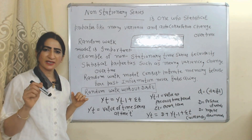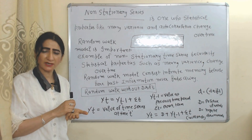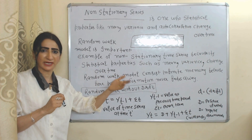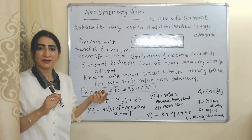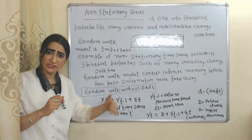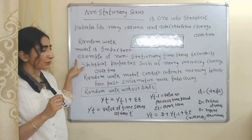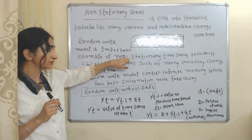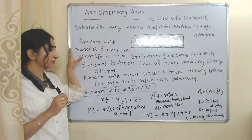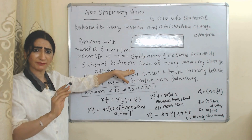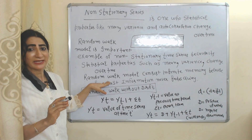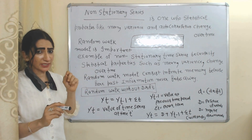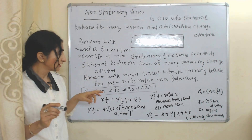In the case of a non-stationary series, mean, variance, and autocorrelation will change over the time period. The random walk model is an important example of a non-stationary time series, because in the case of a random walk model, mean and variance change over the time period. The random walk model also consists of infinite memory — that means past information never fades away.